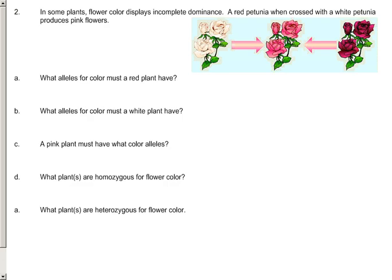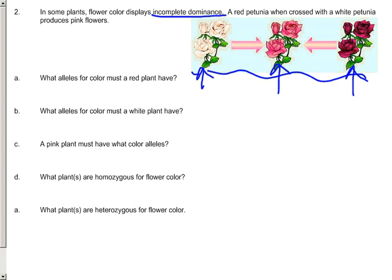This example is an incomplete dominance. This is a special kind of situation, which we see in this picture right here. A red flower is crossed with a white flower, and they have a possibility of making individuals that are kind of mixed halfway in between — in this case, a pink flower. This only happens in certain kinds of organisms with certain kinds of traits; it doesn't happen all over the place. We know that the red flower is going to have a homozygous dominant genotype, and the white plant is also going to have a homozygous dominant, but with different letters. So we use R for red and W for white.